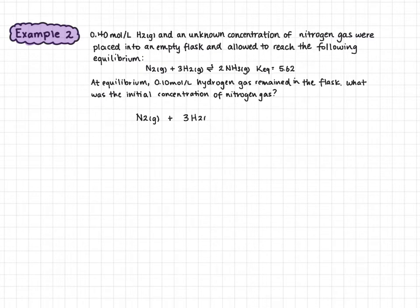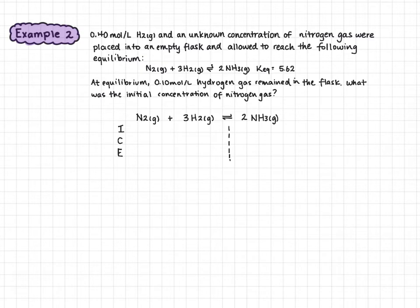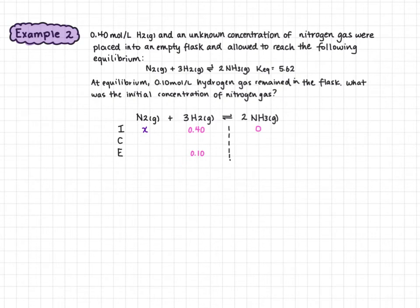We start by rewriting the balanced reaction and constructing an ice table, writing ICE down the left side and dividing the table into reactants and products. The initial concentration of hydrogen gas is 0.40, initially we have no ammonia, and we represent the initial concentration of nitrogen with x. At equilibrium we have 0.10 moles per liter of hydrogen, so the change in hydrogen concentration is negative 0.30 moles per liter.